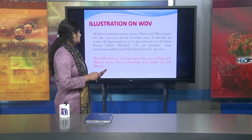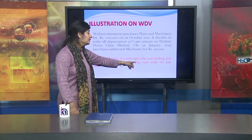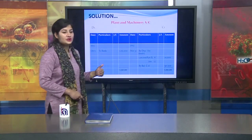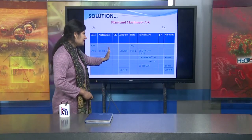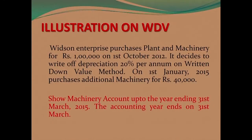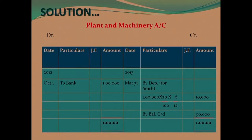Let us solve this. We prepare the plant and machinery account. The machine cost 1 lakh, purchased on 1st October 2012. For the first period, from 1st October 2012 to 31st March 2013, that is 6 months. Depreciation is 1,00,000 into 20/100 into 6/12, which comes to 10,000. The balance remaining is 1,00,000 minus 10,000 = 90,000. This balance carries forward to the next year.